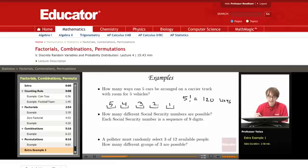The next example: How many different social security numbers are possible? Each social security number is a sequence of nine digits. So it sort of looks like this. We have our three, we have our two, and then we have our four.